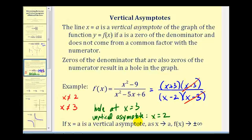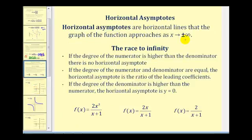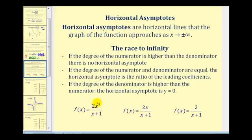Now let's talk about horizontal asymptotes. Horizontal asymptotes are horizontal lines that the graph approaches as x approaches either positive infinity or negative infinity. To determine them, we look at how the function behaves as x increases or decreases without bound — we can think of the numerator and denominator as racing to infinity.